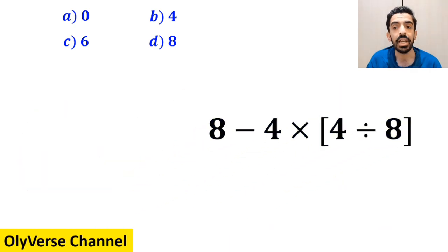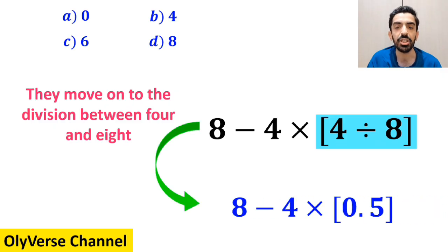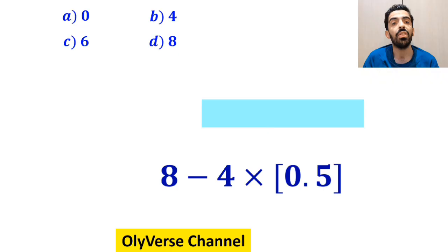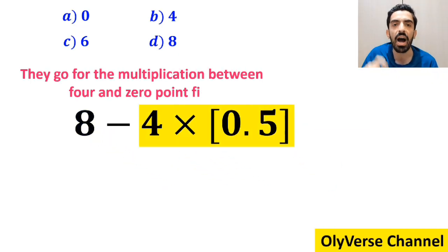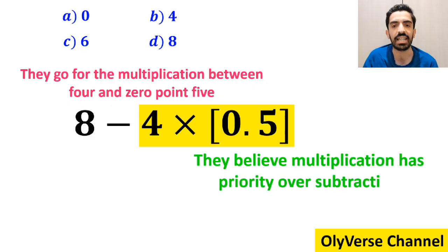In the next step, they move on to the division between 4 and 8, which simplifies the expression to 8 minus 4 times 0.5. Then, they go for the multiplication between 4 and 0.5, because they believe multiplication has priority over subtraction.